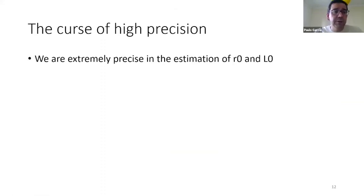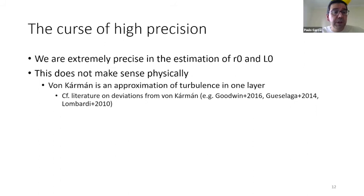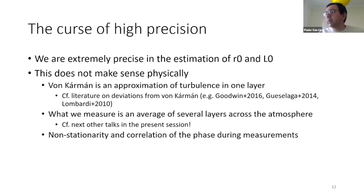And then I call this the curse of high precision. So we are very precise on the measurement of R0 and L0. But we should bear in mind that this does not make sense physically. This is because von Kármán is an approximation you should keep in mind. It's not the reality. And we know that there are several layers and not just one layer. As you've seen during this session, and I'm going to see in the next talk. And of course, there are effects of non-stationarity and correlation of the phase during the measurement. So R0 and L0 are just an approximation of what is really happening, and so we should not expect very high precision.